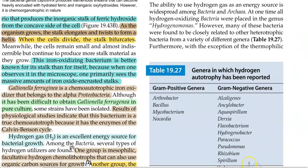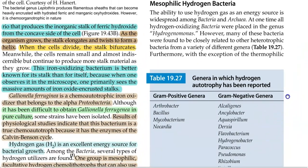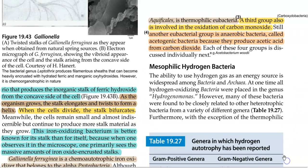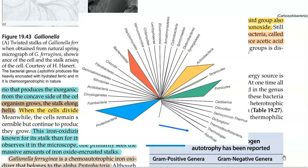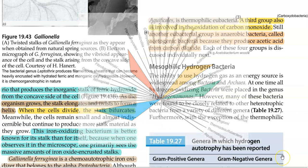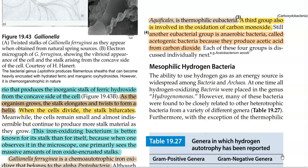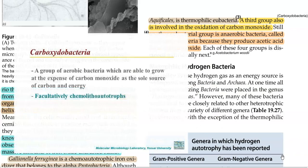The next group comprises bacteria that utilize hydrogen as a strict energy molecule. This particular group consists of thermophilic eubacteria, that is the Aquificales. The third group includes those that can oxidize carbon monoxide while using hydrogen as an energy and electron donor. This group of bacteria is technically referred to as carboxidobacteria.